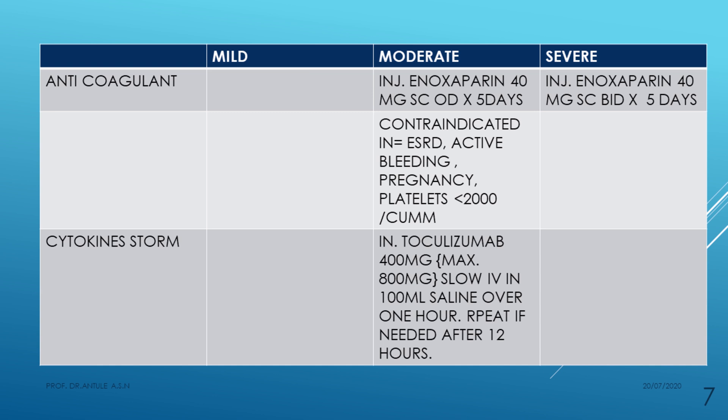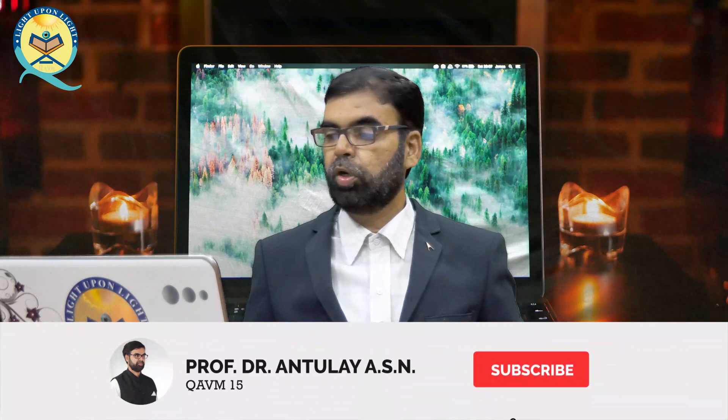Anticoagulant therapy with enoxaparin 40 mg subcutaneous OD for five days is given in moderate cases, and 40 mg subcutaneous BD for 10 days in severe cases. Contraindications include end-stage renal disease (ESRD), active bleeding, pregnancy, and platelet count less than 20,000.